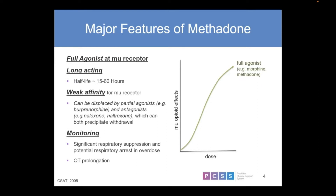As a full opiate agonist, the more that you give, the more the effect — up to the point where it essentially causes respiratory suppression and changes the effect of rising CO2 levels on the medullary respiratory center, resulting in asphyxiation. The body no longer responds the way it normally would and a person just stops breathing. In contrast, an antagonist has no intrinsic activity on the opioid receptor — it attaches and blocks it.